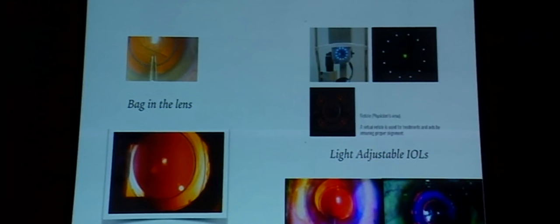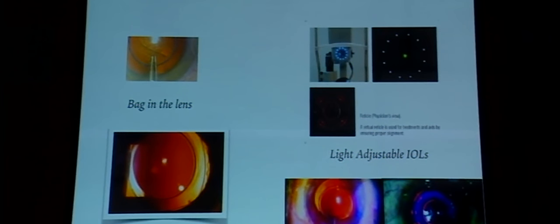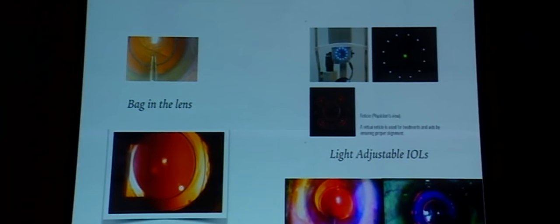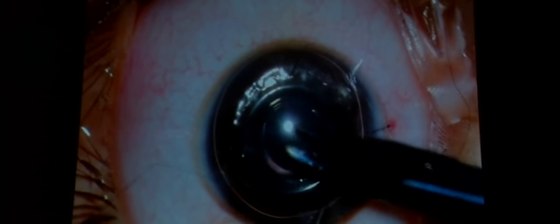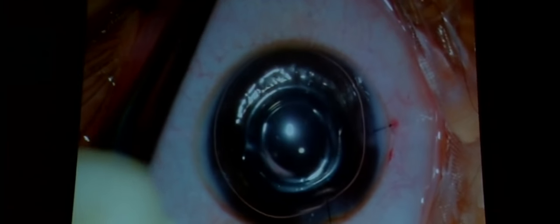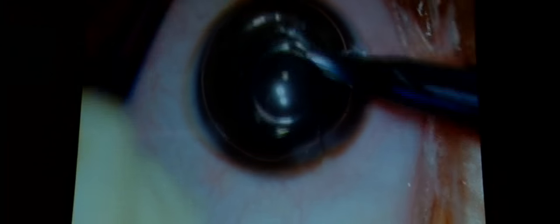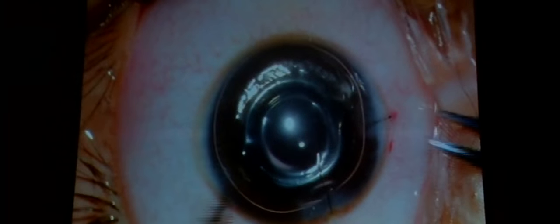There are newer lenses such as the bag-in-the-lens, popularized by Marie-José Tassignon, and light-adjustable IOLs whose power can be adjusted after surgery — potentially useful but not yet available in India. An important closing point: all pediatric cataract wounds must be sutured, even if they appear perfectly sealed on the operating table, because children tend to rub their eyes and sustain injuries.